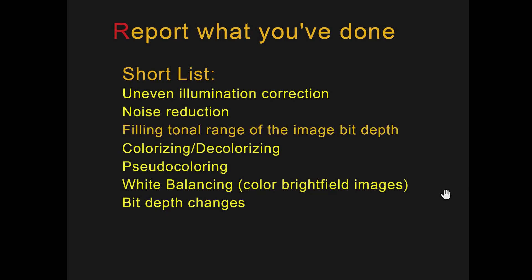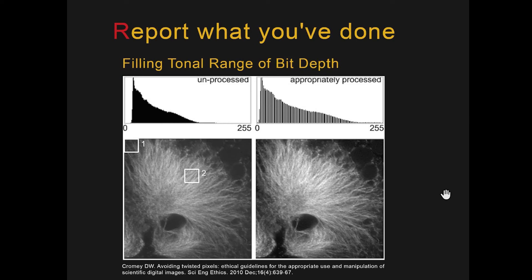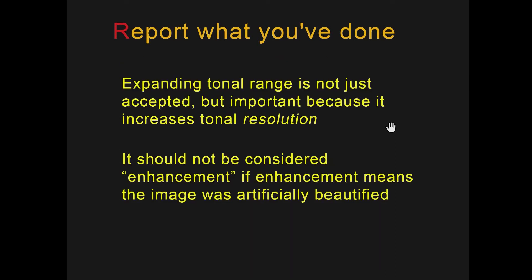Let's talk first about filling the tonal range of the image bit depth, or histogram stretching. This is done 99% of the time to images. What does that mean? When you fill the tonal range of the bit depth, you're stretching the histogram so that it fits between 0 and 255 for an 8-bit image. It's appropriately processed if you stretch the histogram — you may see little gaps in the histogram due to rounding errors. Expanding the tonal range is not just accepted but important because it increases tonal resolution.